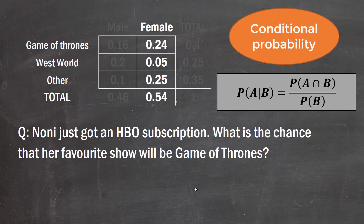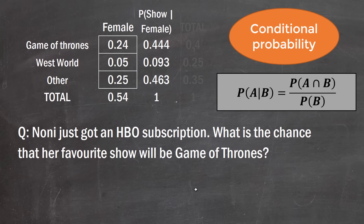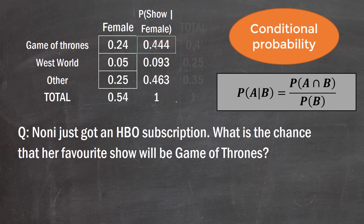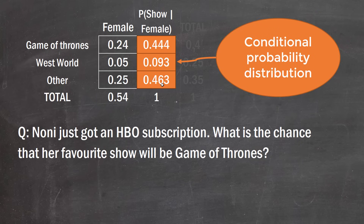We can now create a new column: the probability of preferring each show given someone is female. We get 0.4444 for Game of Thrones, and we can do the same for Westworld and other. The resulting column is called the conditional probability distribution — the distribution of show preference given someone is female. Like all probability distributions, it adds up to one.